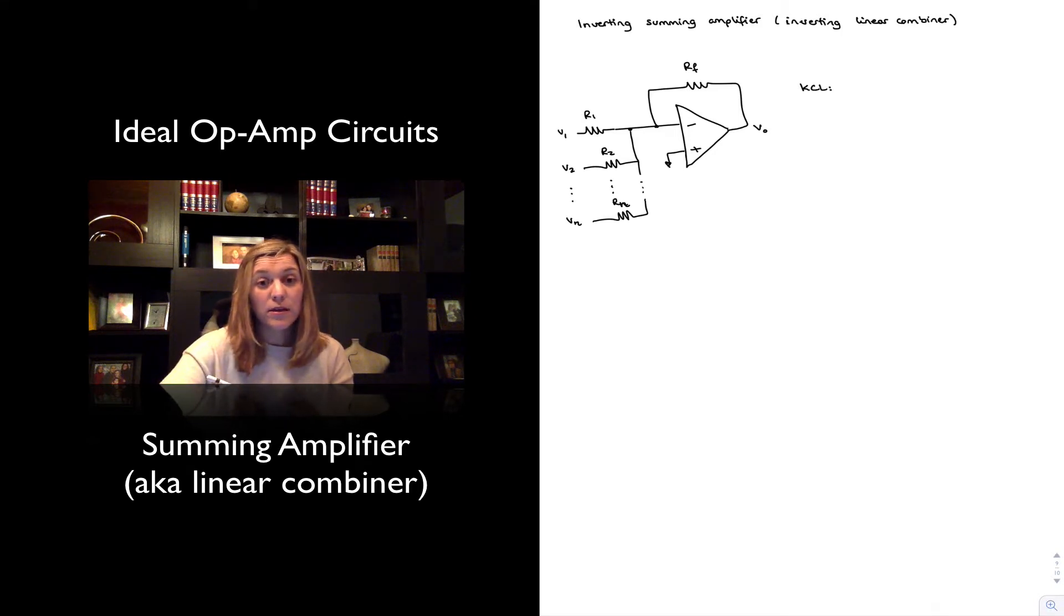Again, we're assuming an ideal op-amp. Therefore, if our positive input terminal is sitting at ground, that means that the negative input terminal is also sitting at ground. And so I can say sum of the currents leaving that node is equal to zero. And since I know that the current going into the negative input terminal of the op-amp is equal to zero,